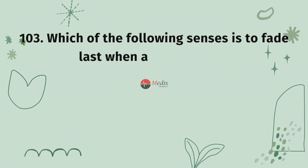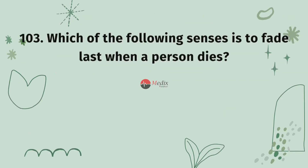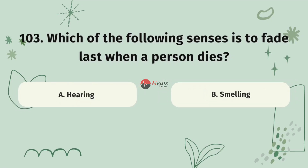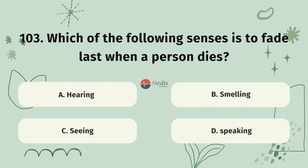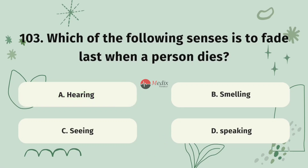Question 103. Which of the following senses is the last to fade when a person dies? Option A, hearing. Option B, smelling. Option C, seeing. Option D, speaking. The correct answer is A.